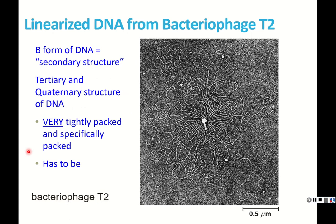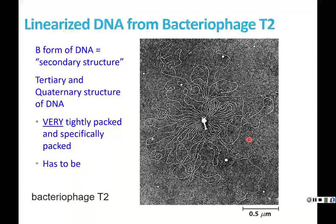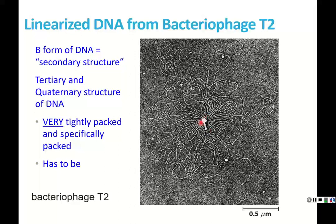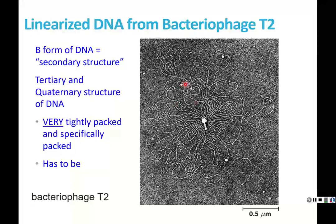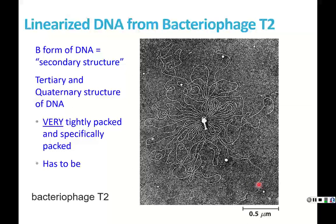This figure from our book shows a virus that infects bacteria cells — a bacteriophage, specifically bacteriophage T2, shown in the middle. The DNA has spilled out in this electron micrograph. We can see the DNA, and it looks like a string. You can see how long this molecule is compared to the size of the virus it fits into.